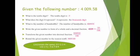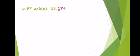Round the given number to the nearest tenth. The tenths digit is five. The next digit is eight, and eight is more than five, so we add one to the five and it becomes six. The eight rounds to zero, so the number will be four thousand nine point six zero.